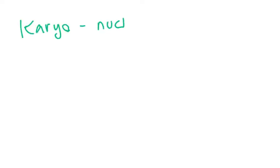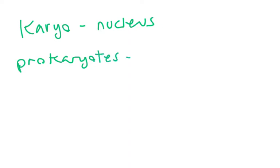To start out, let's define prokaryote and eukaryote, which are two major classes of cells. Karyo actually means nucleus. So when we talk about prokaryotes, pro means before — so before nucleus.